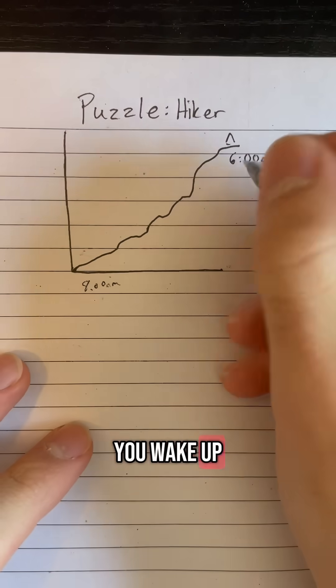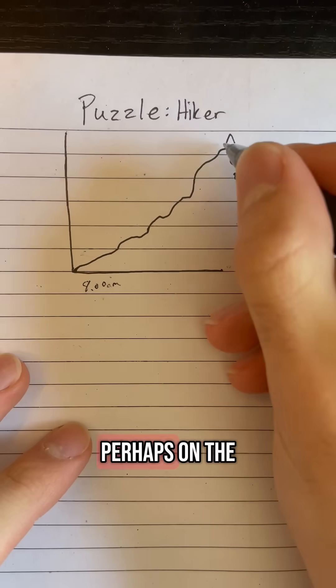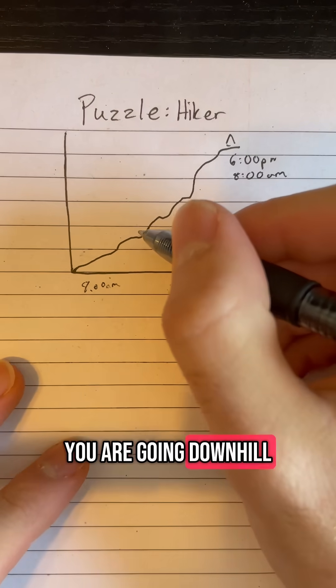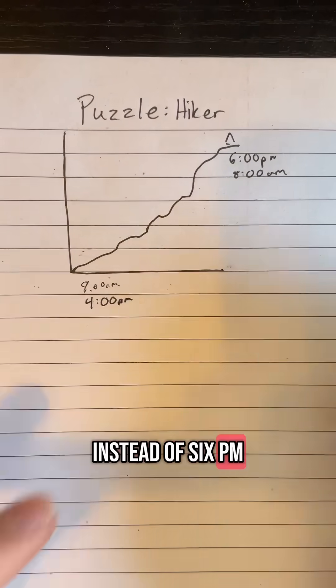The next day, you wake up, have breakfast, and start hiking down again at 8am. Perhaps on the way down, since you are going downhill, you go down faster, and this time you finish at 4pm instead of 6pm.